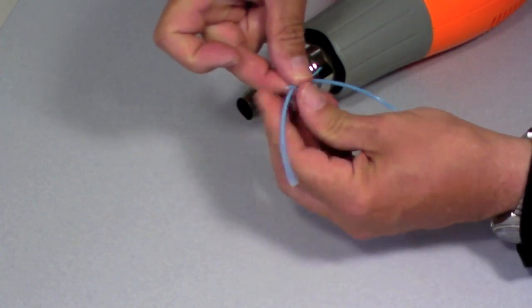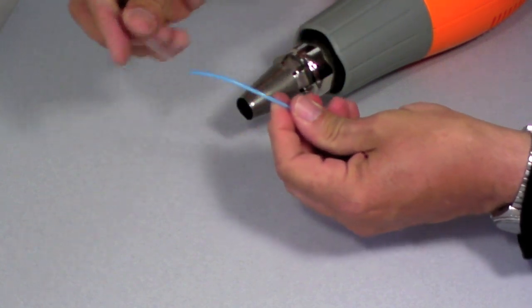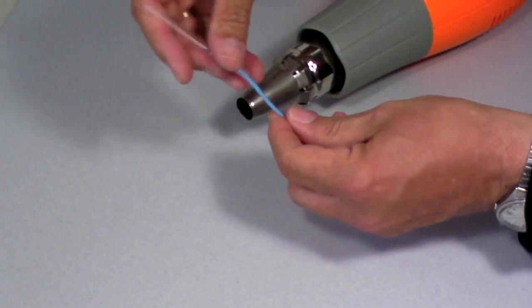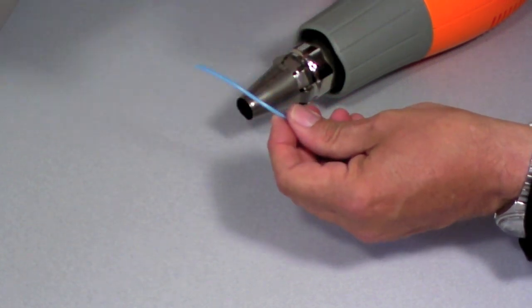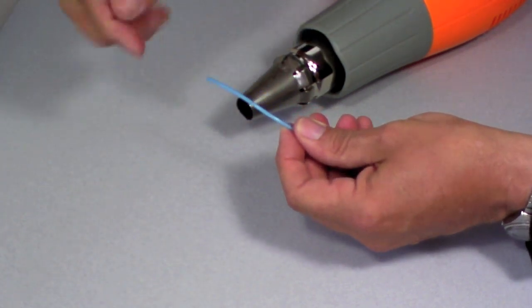I'm going to slip this heat shrink over, and if you find it sticky, just wet it.